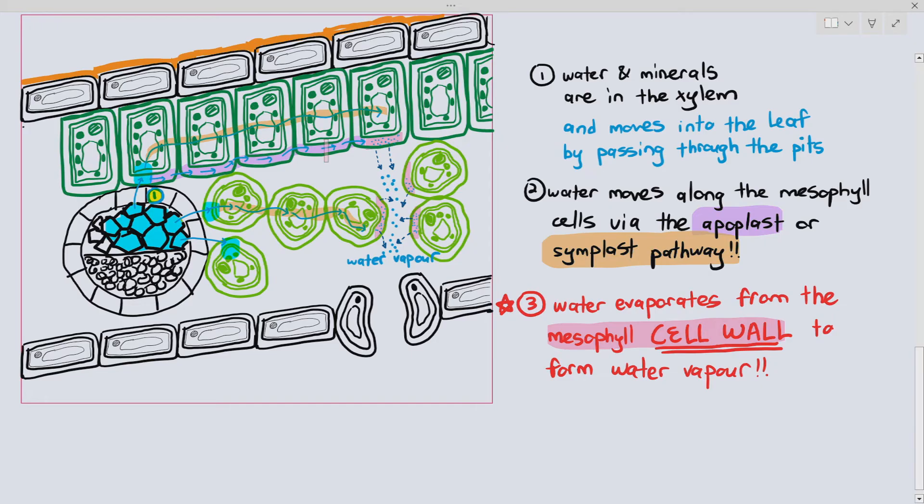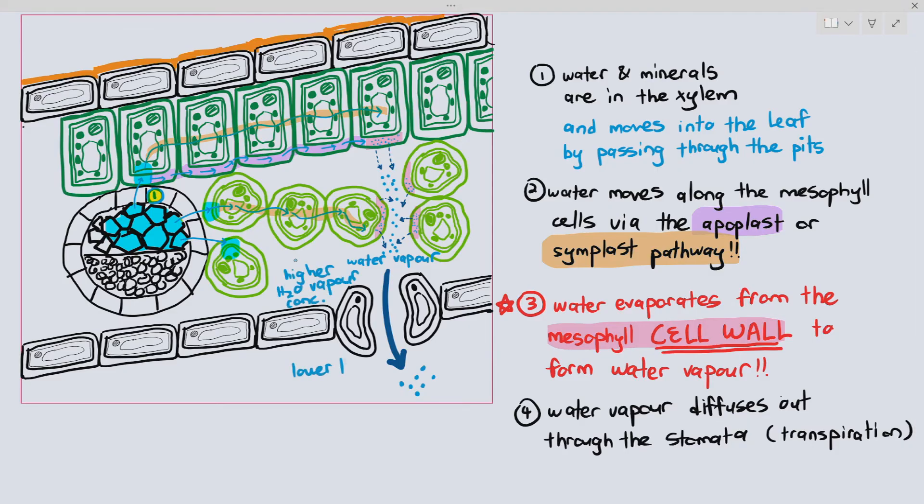And if the stoma is open, what will happen is the water diffuses out through the stoma. And that process is known as transpiration, where water vapor diffuses from an area of higher water vapor concentration inside the leaf to a lower water vapor concentration out of the leaf, down the concentration gradient.